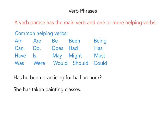Let's talk more about verb phrases. A verb phrase has the main verb and one or more helping verbs. Here is a list of common helping verbs you will probably run into, especially on your test: am, are, be, been, being, can, do, does, had, has, have, is, may, might, must.